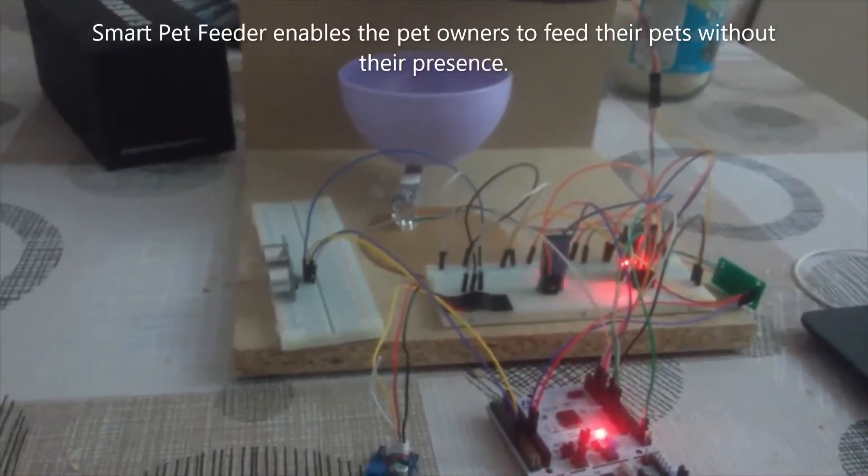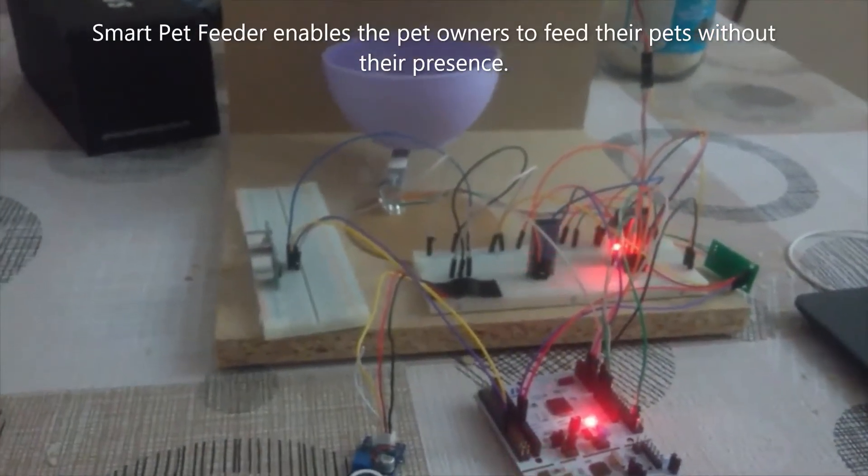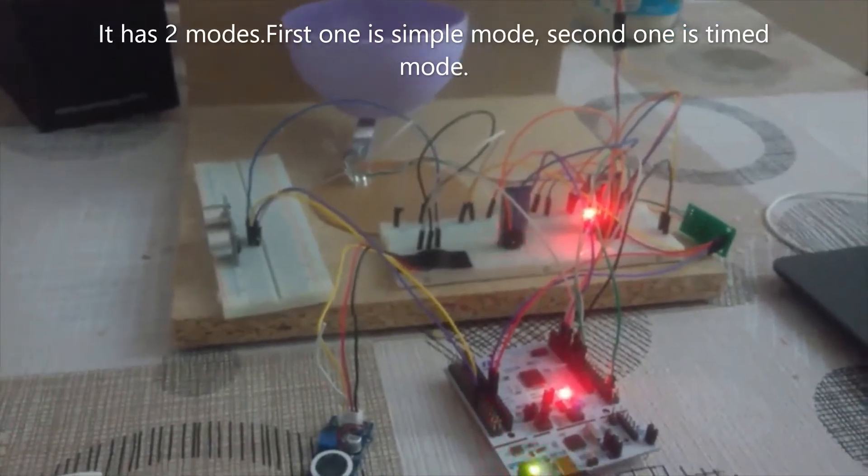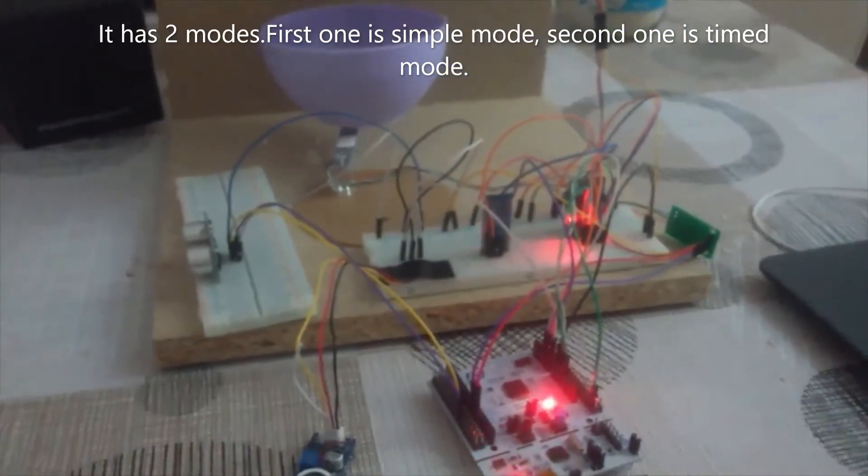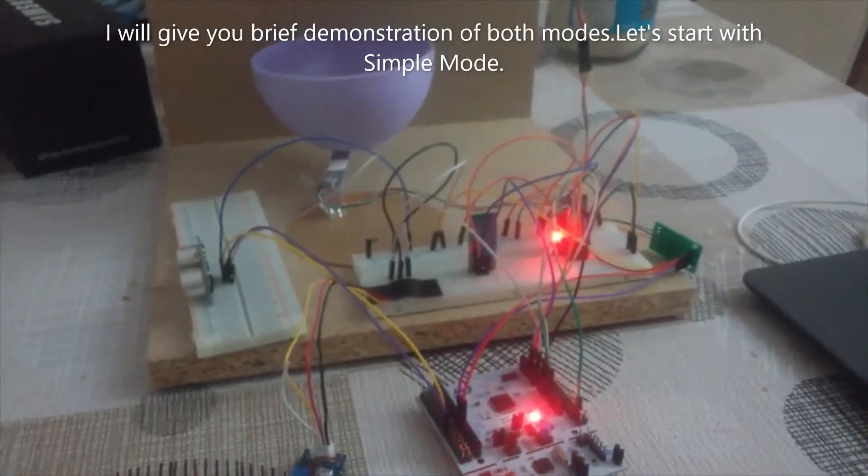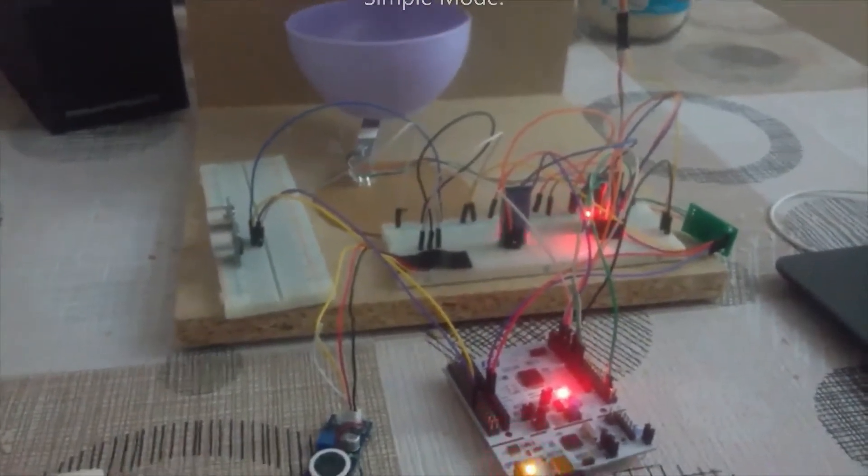SmartPath Feeder enables pet owners to feed their pets without their presence. It has two modes. First one is simple mode, second one is timed mode. I will give you a brief demonstration of both modes. Let's start with simple mode.